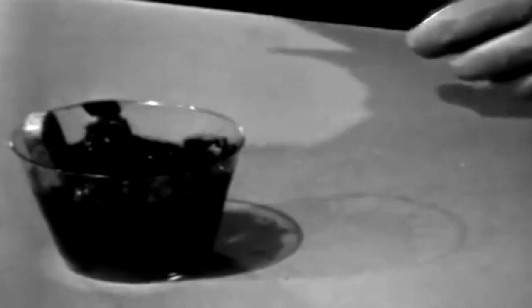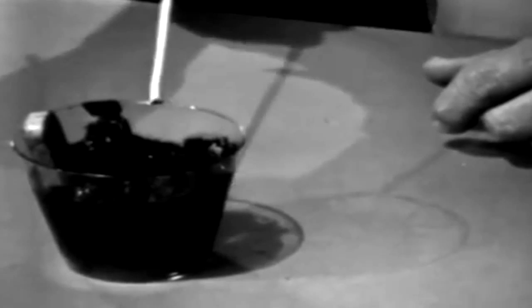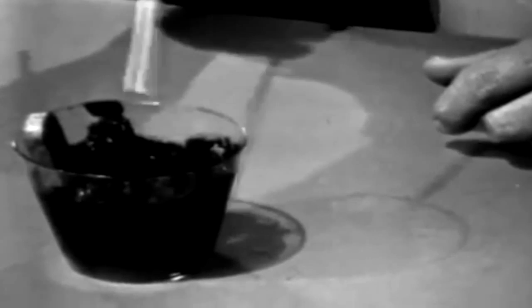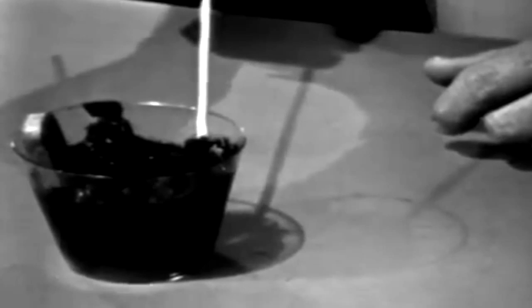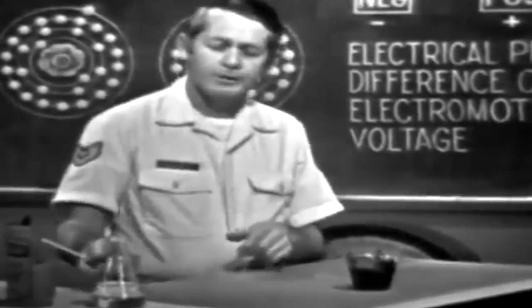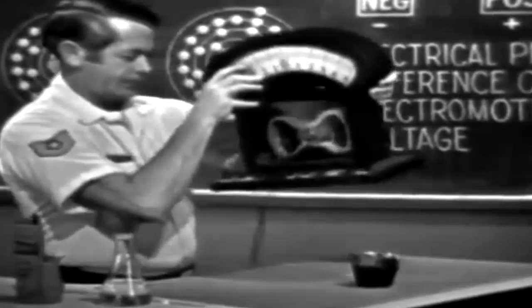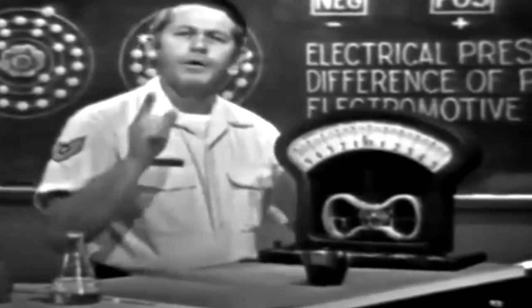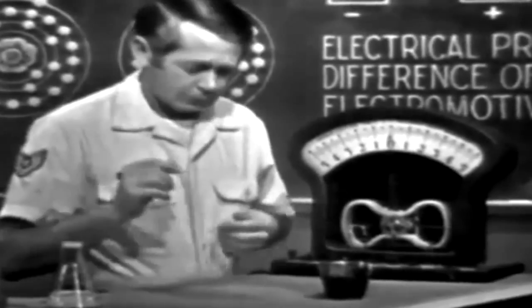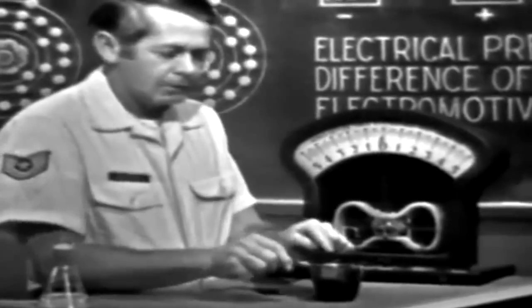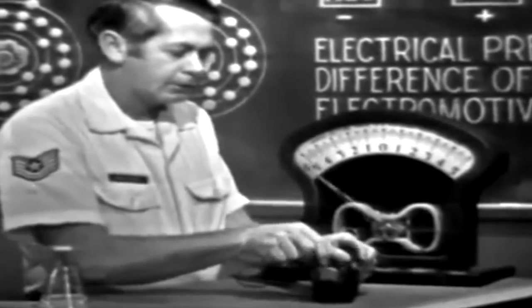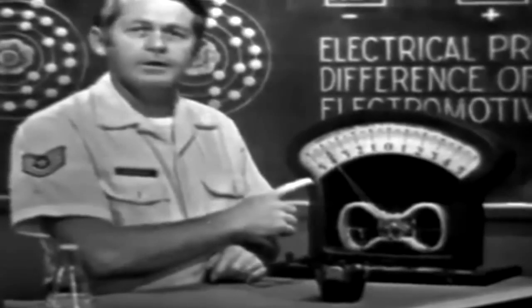Now here's what will take place. The salammoniac will react with the two materials and cause the zinc to gain electrons, the carbon to lose electrons. Now the zinc then will become negative, the carbon positive. Now an EMF or voltage will exist between the two. Now to check the results I'm going to use this meter. Now if a voltage or EMF does exist, it'll force electrons through this meter causing it to deflect. So let's connect the meter to the material, one side here to the zinc, the other side here to the carbon. And of course you can see that the meter does deflect.